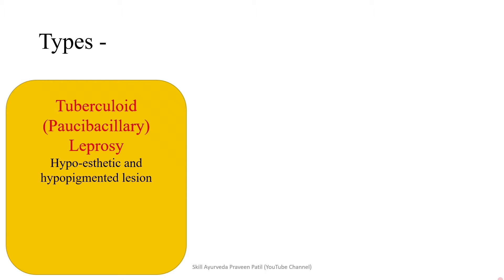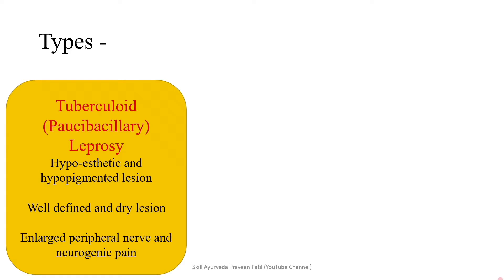When the host has good immunity, those people come under the tuberculoid pole, and people with very poor immunity come under the lepromatous pole. In between there are some borderline classifications. The WHO has classified tuberculoid as paucibacillary and lepromatous as multibacillary. In paucibacillary, hypoesthetic and hypopigmented lesions are seen — well-defined, dry lesions, enlarged peripheral nerves, and neurogenic pain are observed.